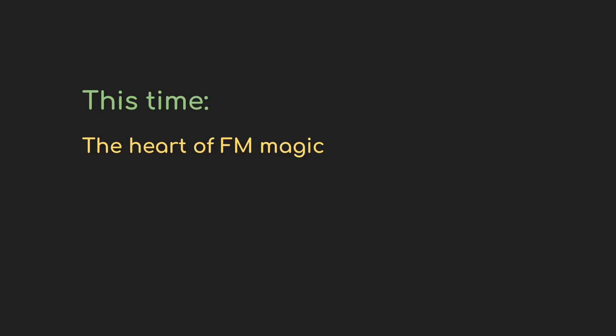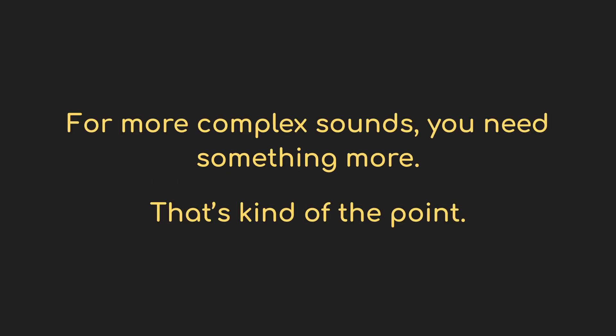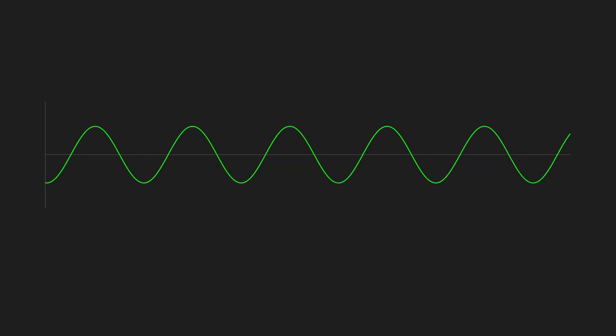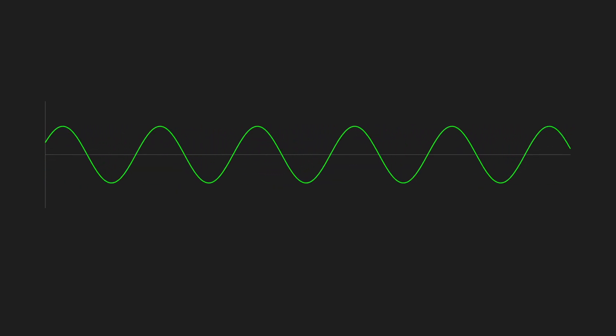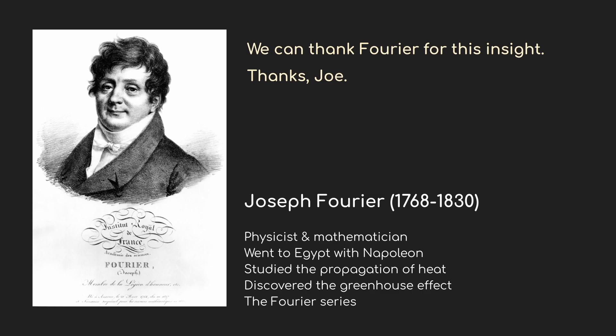If you're going to watch just one video about how FM synthesis works, this is probably a good place to start. Here, we recognize that the timbre of a sound — its color or quality — is defined by a set of harmonics. I have a whole other video on why different waveforms sound different, but let's do a quick recap. So far we're working with just pure sine waves, but most sounds are more complex than that.